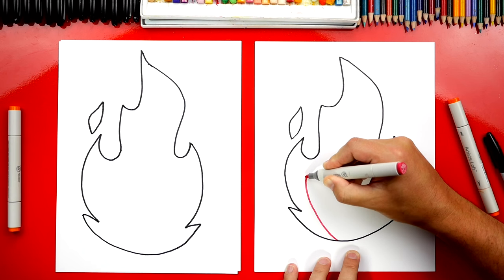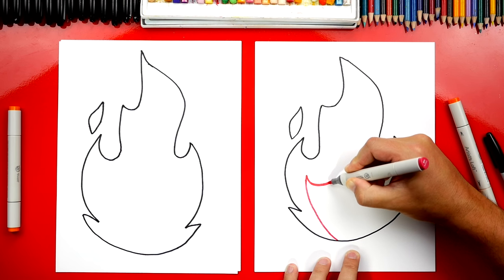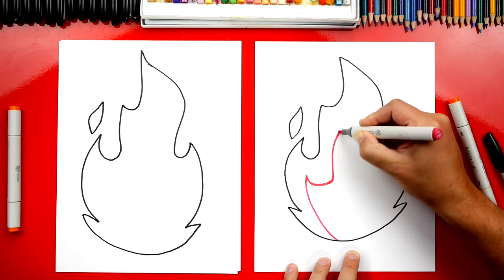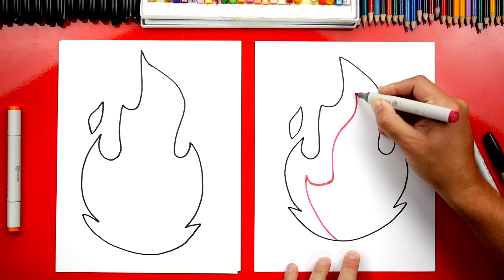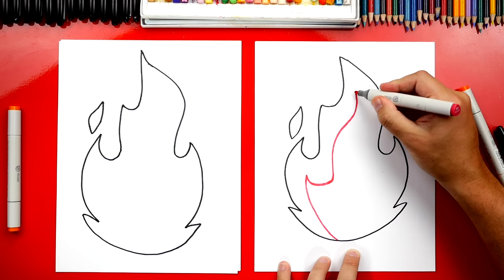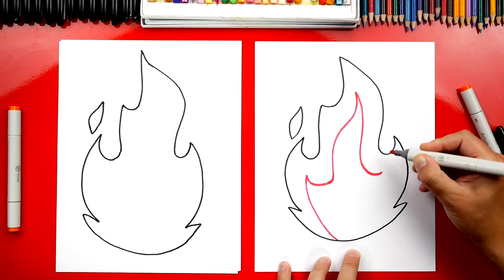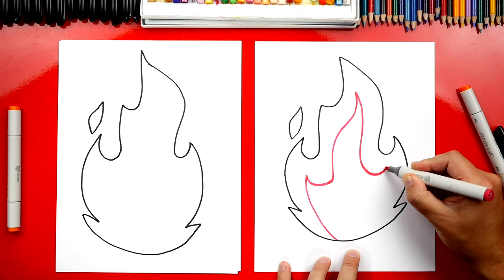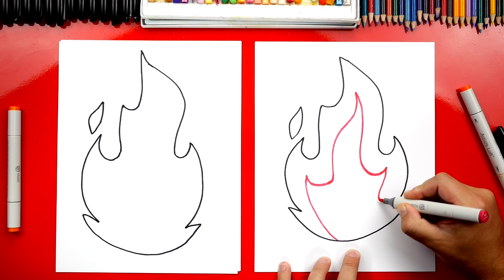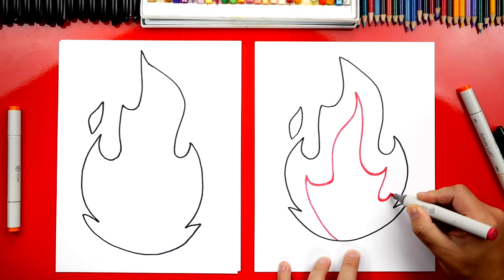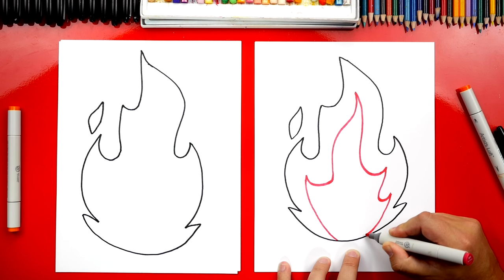So curve up like this, then we're going to curve back down and then we're going to do an S curve up to the top. Then over here on this side, we're going to curve back down. We're just matching basically the same shape as the outside. Curve back and do another little zigzag and then down to the bottom.